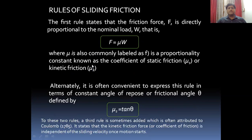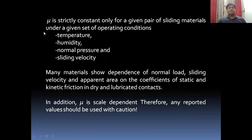The first principle says that force of friction is always proportional to the normal load or normal reaction, and the ratio is called the coefficient of friction. The angle of limiting friction, or angle of repose, is related to the coefficient of friction. At the limiting case, μs (static) is equal to tan θ, where θ is the angle of repose or frictional angle. Now μ is constant for a given pair of sliding materials and operating conditions like temperature, humidity, pressure, and sliding velocity.